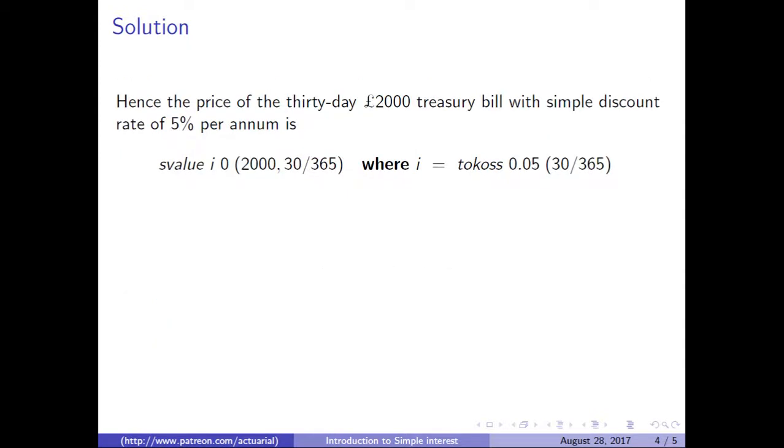Now we have all we need to calculate the price of the treasury bill. The price at simple discount rate of 5% per annum is S value of I of 0 of 2000 at 30/365, where I equals tokos of 0.05 of 30/365.